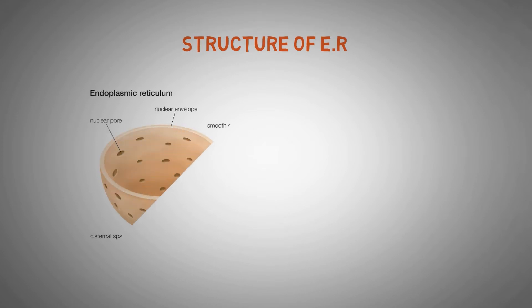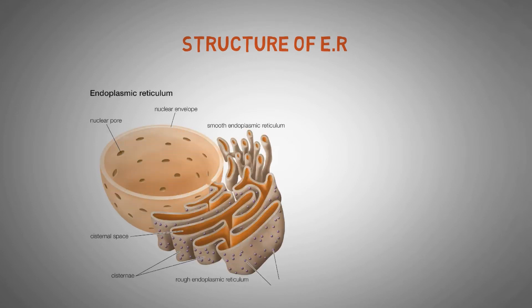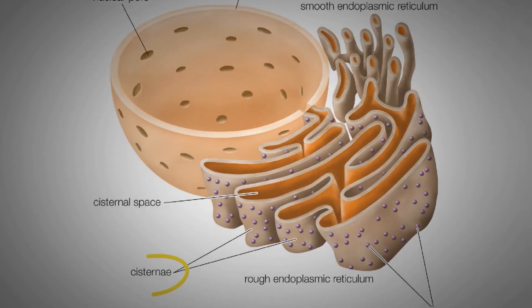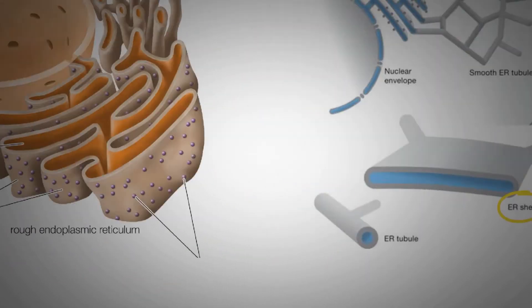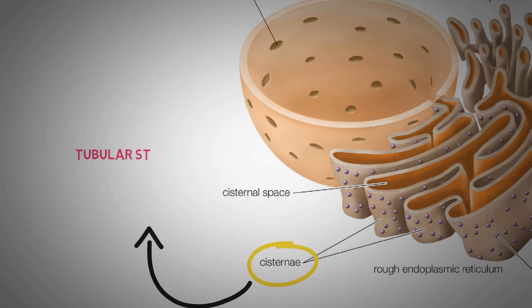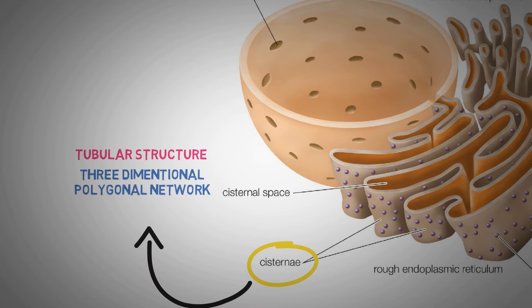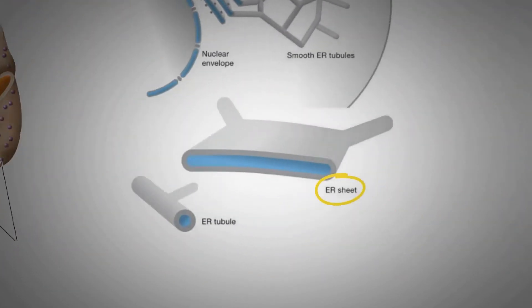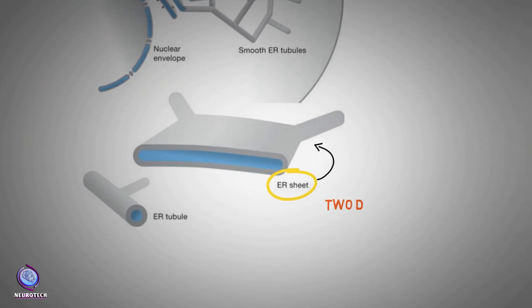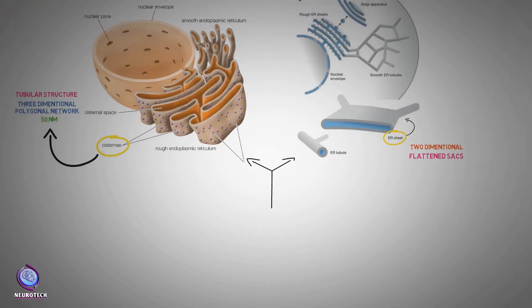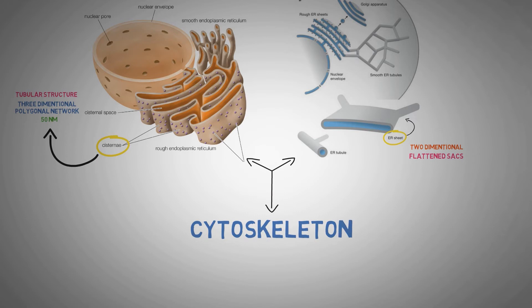The endoplasmic reticulum membrane system can be morphologically divided into two structures: the cisternae and sheets. The cisternae are tubular in structure and form a three-dimensional polygonal network, about 50 nanometers in diameter. Endoplasmic reticulum sheets are membrane-enclosed, two-dimensional flattened sacs that extend across the cytoplasm, held together by the cytoskeleton.